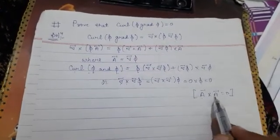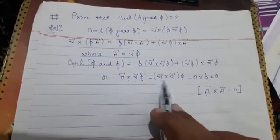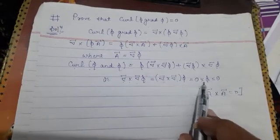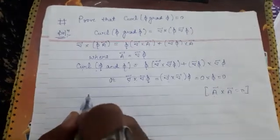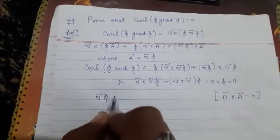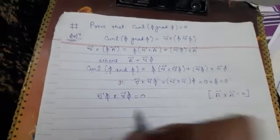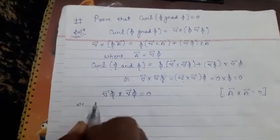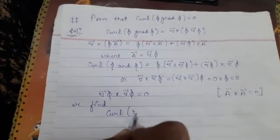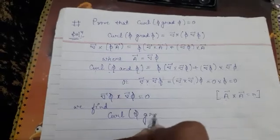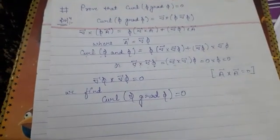φ as it is zero, that means del φ cross del φ equals zero. Therefore, we can conclude that curl φ gradient φ equals zero.